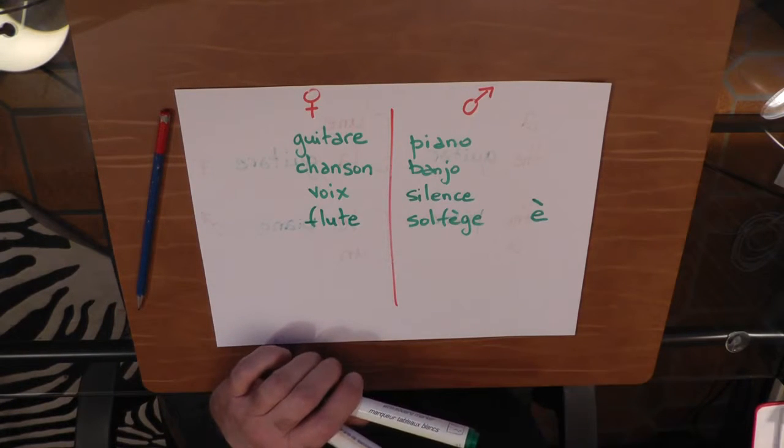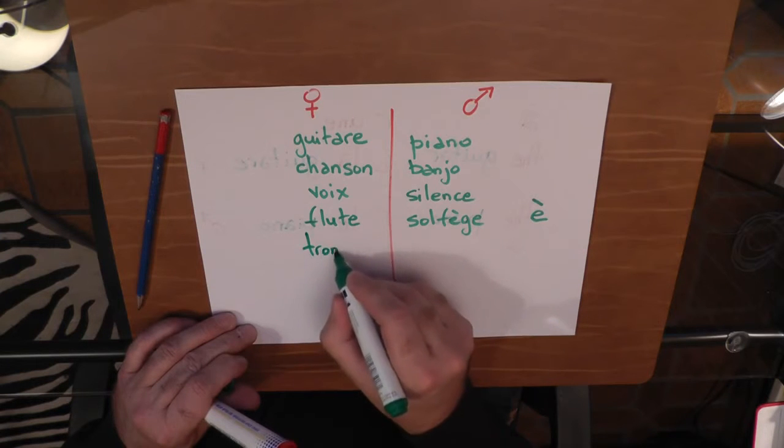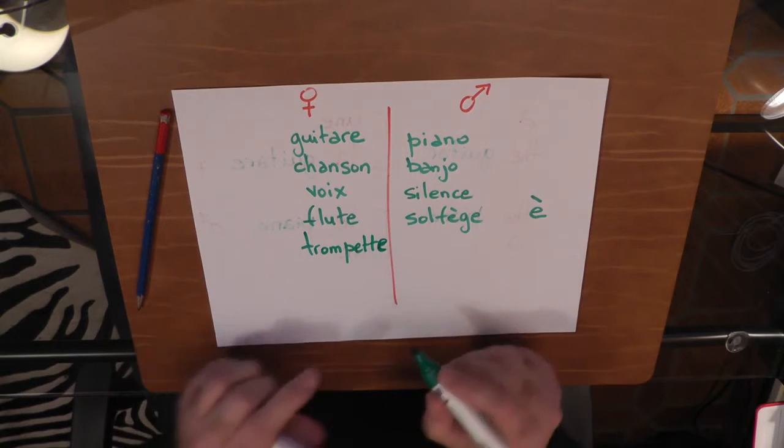A last one in every category. For example, if I say trumpette. Trompette. Trompette. La trompette. Une trompette.